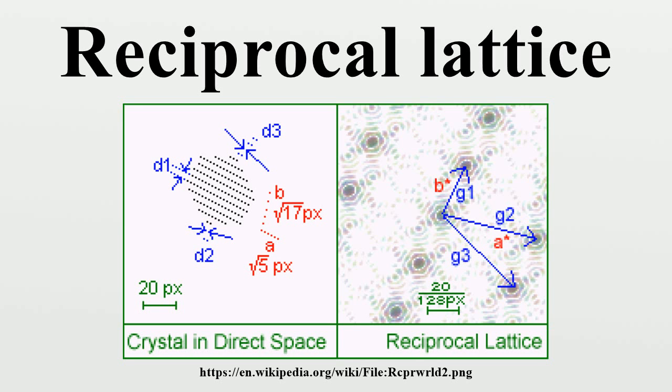The cubic lattice is therefore said to be self-dual, having the same symmetry in reciprocal space as in real space.